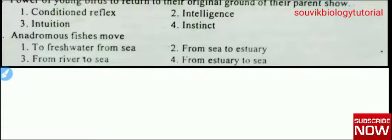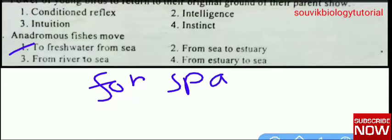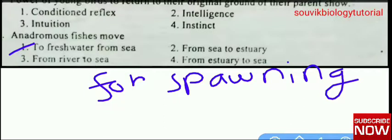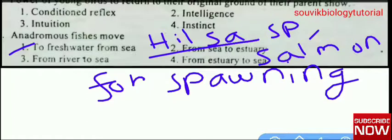Next question: anadromous fishes move — to fresh water from sea, from sea to estuary, from river to sea, or from estuary to sea? The right answer is: anadromous fishes move to fresh water from sea for spawning. Examples of anadromous fishes are Hilsa, Elisa, and Salmon.